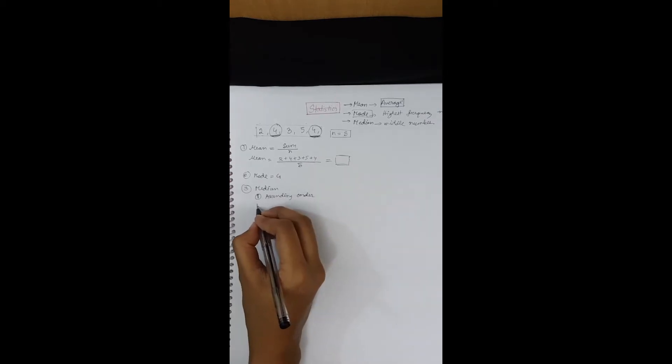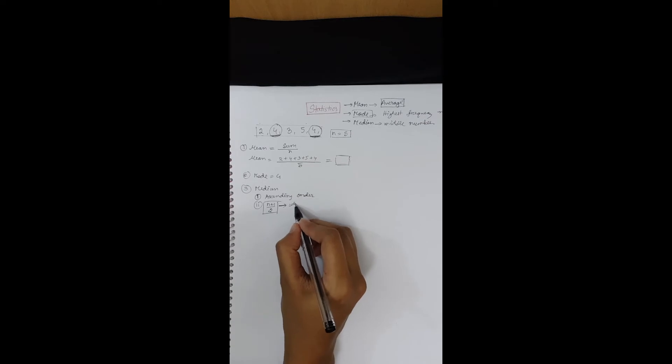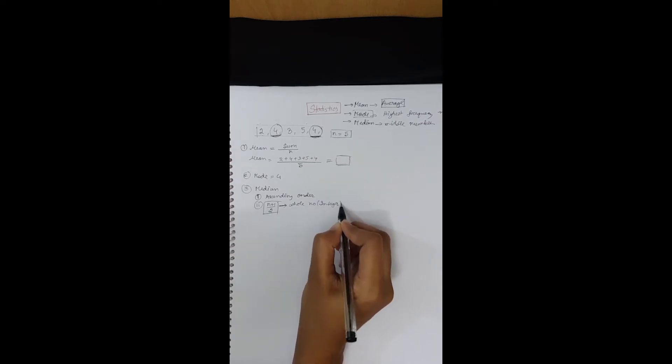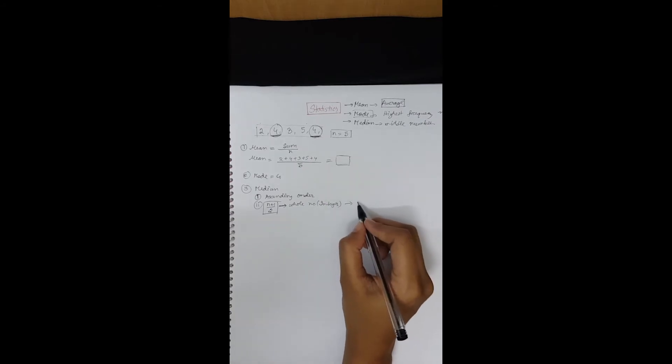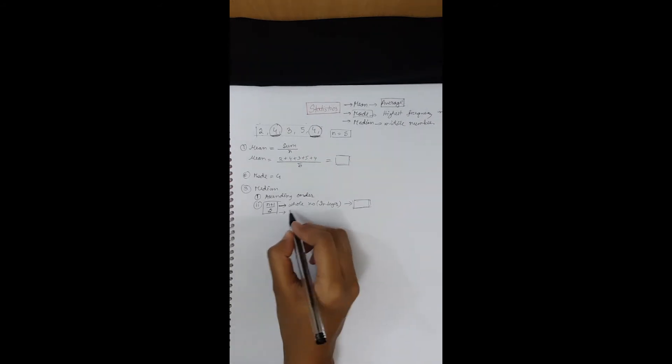And then calculate the value of n plus 1 by 2. n represents the number of data. If n plus 1 by 2 is a whole number, that is an integer, then that value will represent the term which is the median. But if the value is not a whole number, it's a decimal, then you need to find the average.